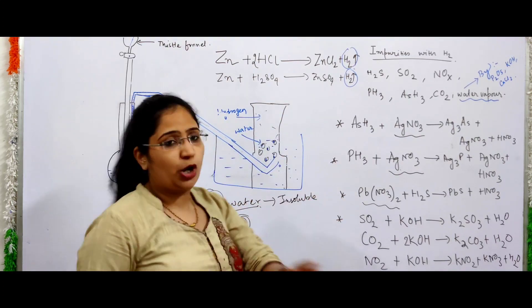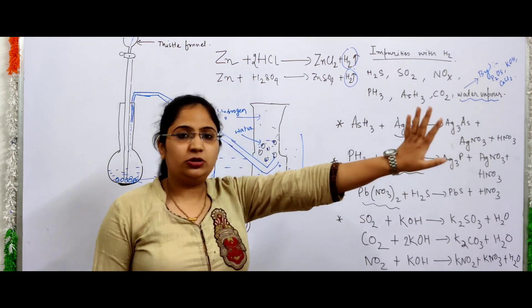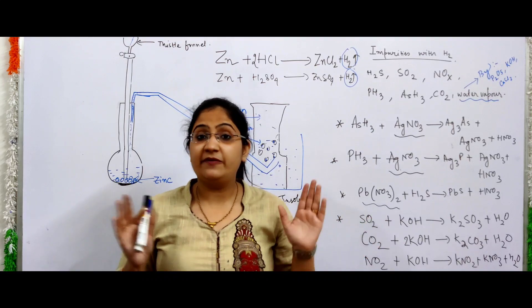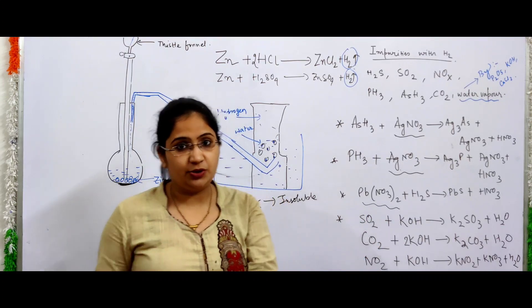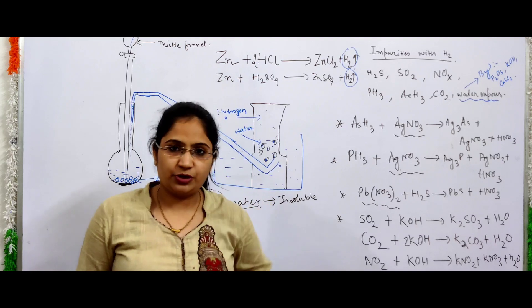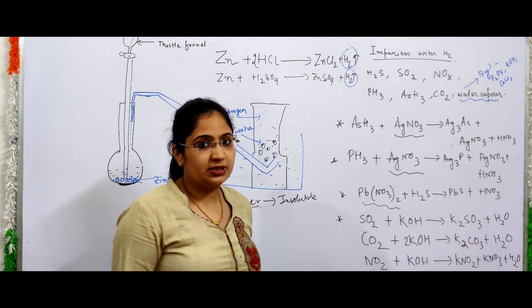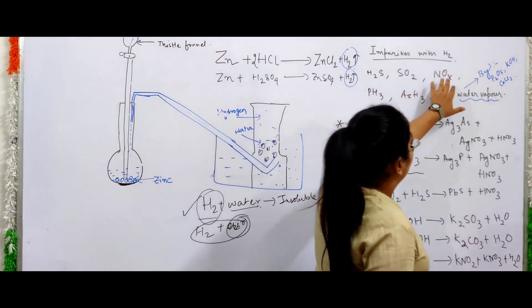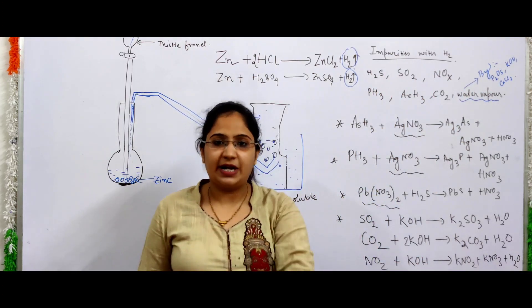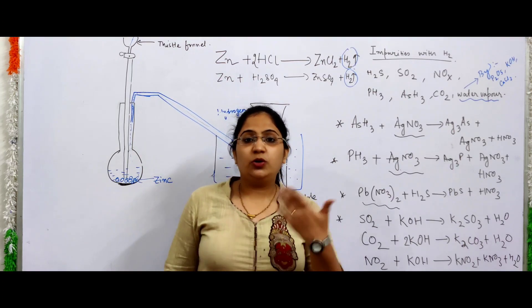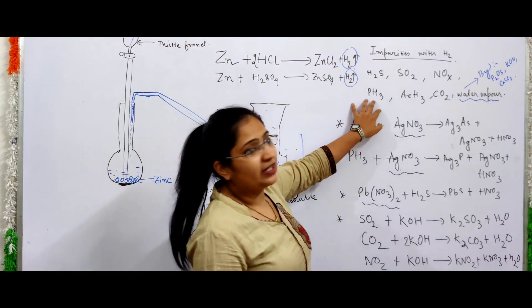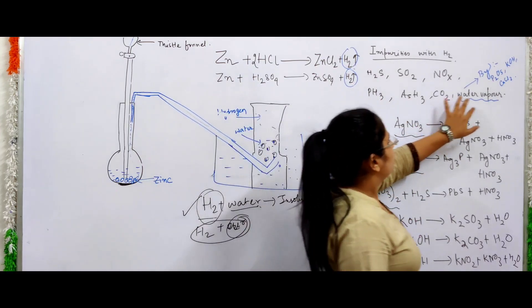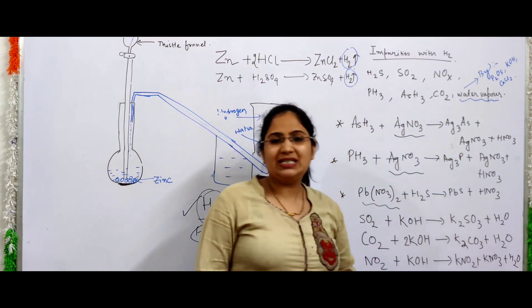Now for the next step: hydrogen generated this way contains some impurities, and we need pure hydrogen. The impurities present with hydrogen during this process are: hydrogen sulfide (H2S), sulfur dioxide (SO2), oxides of nitrogen (NOx — NO2, NO3), phosphine (PH3), arsenic hydride (AsH3), carbon dioxide (CO2), and water vapor.